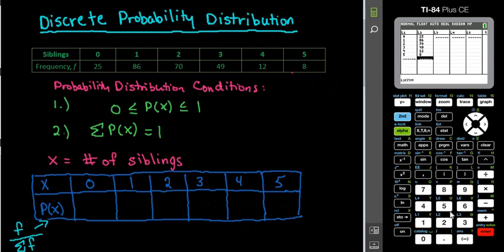And then you always want to check to make sure that all of your values are correct. So 0, 1, 2, 3, 4, 5, 25, 86, 70, 49, 12, and 8.